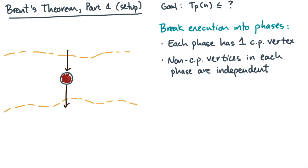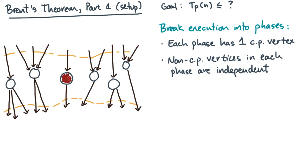Now consider any non-critical path vertices that have been assigned to this phase. These vertices can only have edges that enter the phase or exit the phase, but they can never depend on one another. For example, this is okay, but a dependence like this would not be allowed.